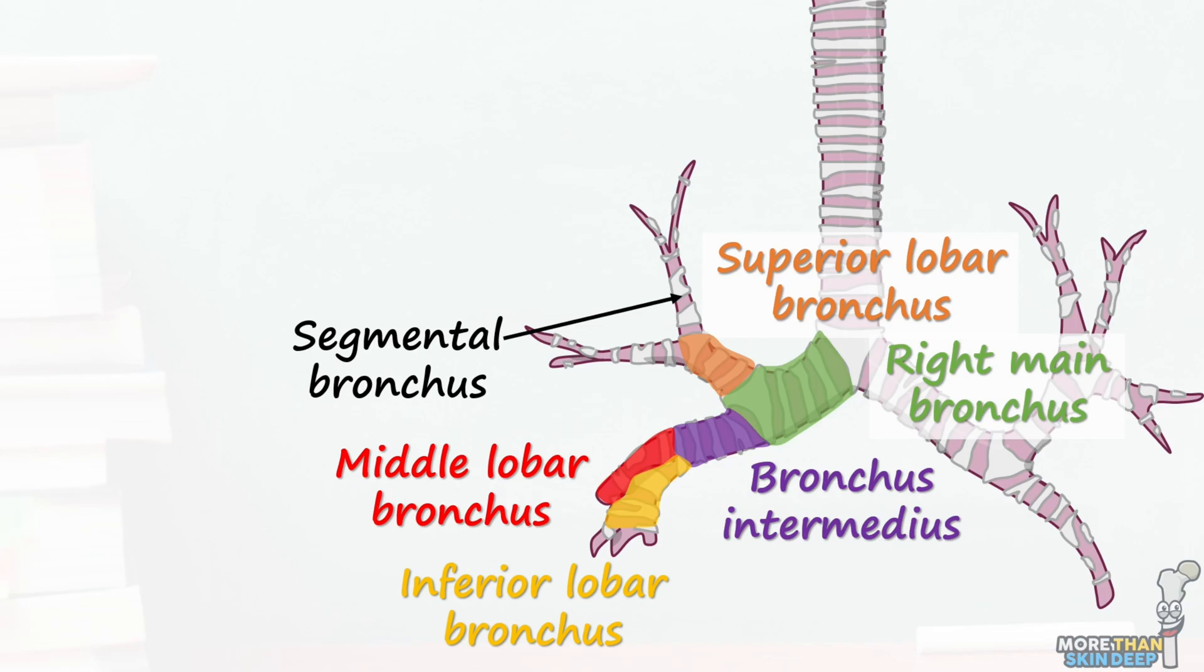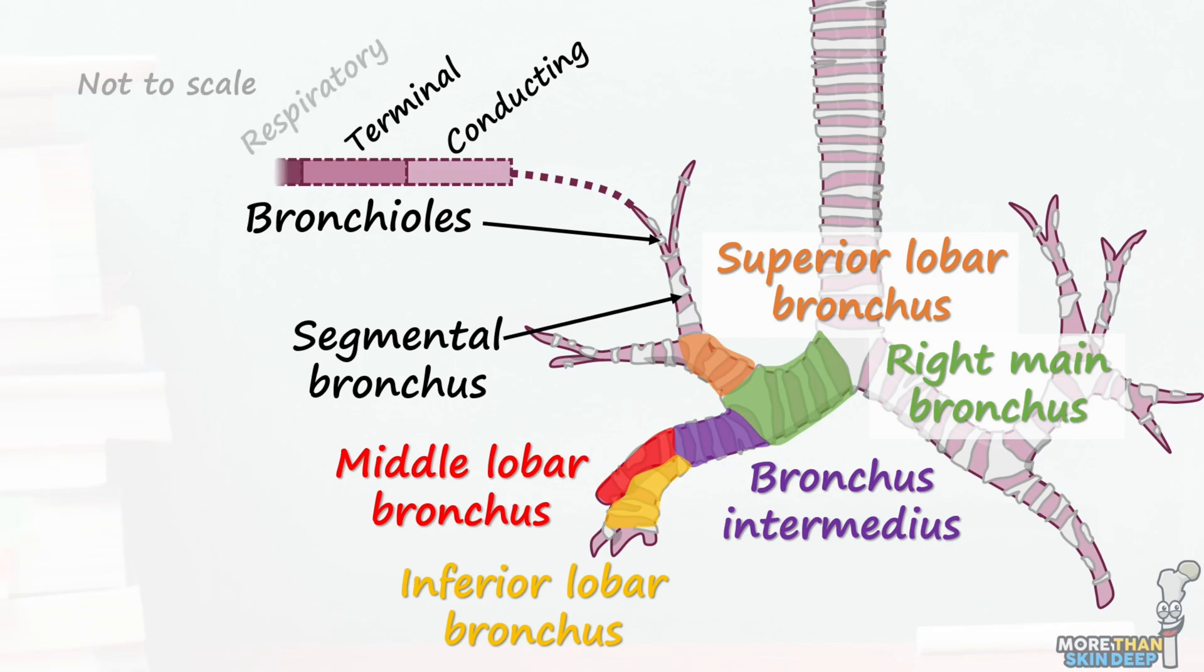Within the bronchopulmonary segments, the segmental bronchi will continue to branch into smaller and smaller airways known as bronchioles. These bronchioles do not have a cartilaginous ring like the bronchi or trachea. This branching continues a total of 20 to 25 more times to produce conducting bronchioles and terminal bronchioles.